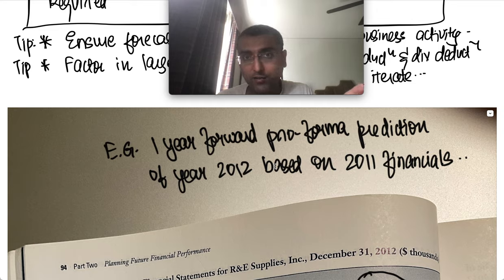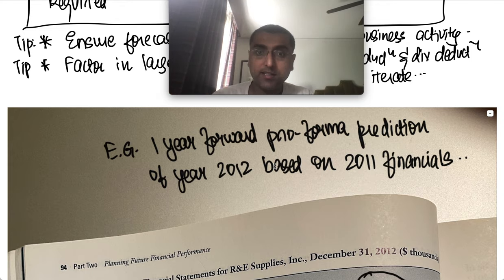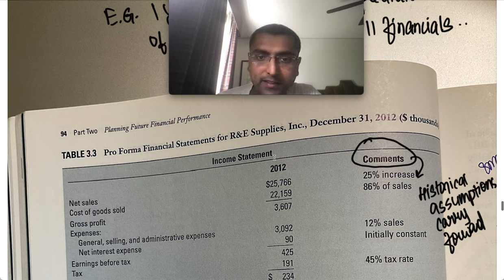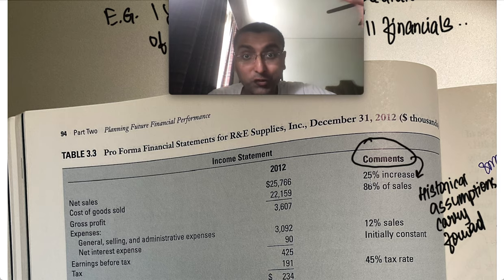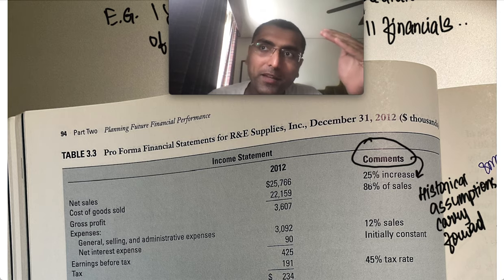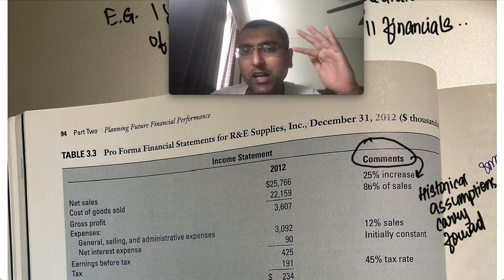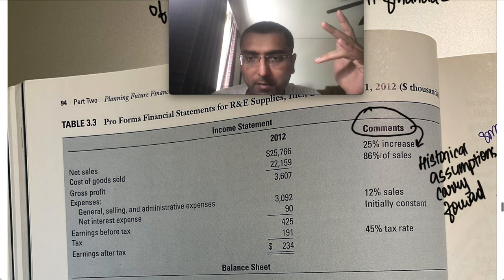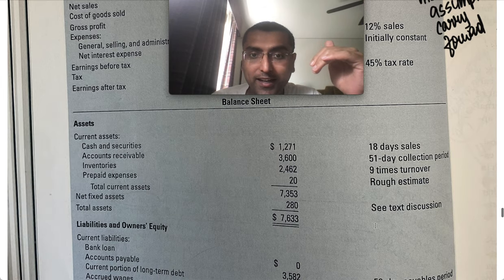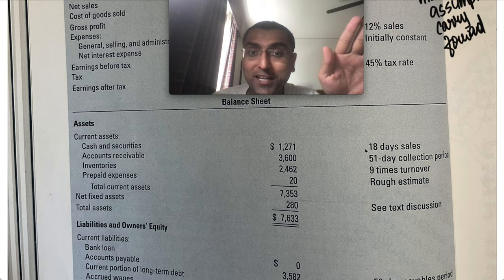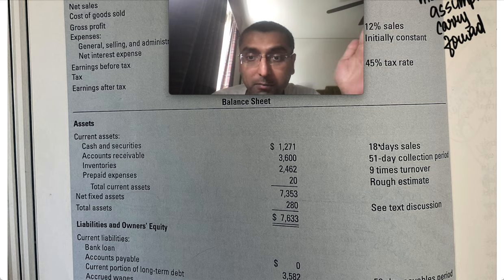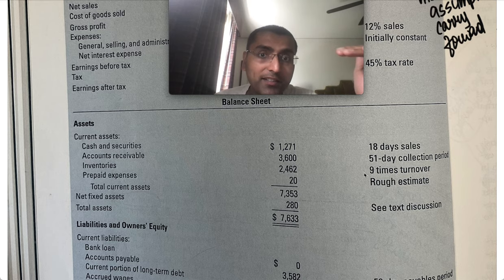Here's an example of a one-year Proforma: look at 2011 financials and forecast 2012. You don't just look at 2011 — you look at the last four or five years, compute percentages, then forecast. For example, if you expect a 25% increase in sales, and 86% of sales as cost of goods, you apply those historical ratios to project the future. You'll also set minimum and maximum expectations — like a minimum of 18 days of sales — and improve ratios accordingly.